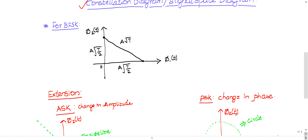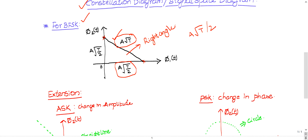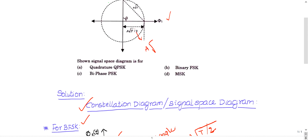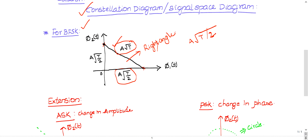For Binary Frequency Shift Keying (BFSK), the constellation diagram forms a right angle triangle. In the question, one length is given as A√(T/2) and the other as A√T. Since a dotted circle is shown, the radius on both sides is equal — meaning the other side is also A√(T/2). If Pythagoras theorem is applicable to this triangle, then we can conclude it is a BFSK modulation.